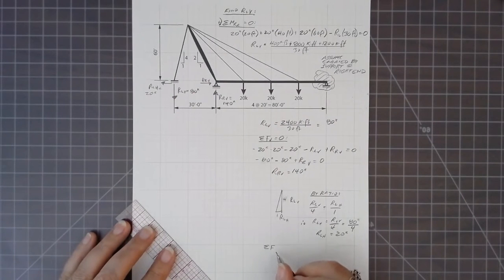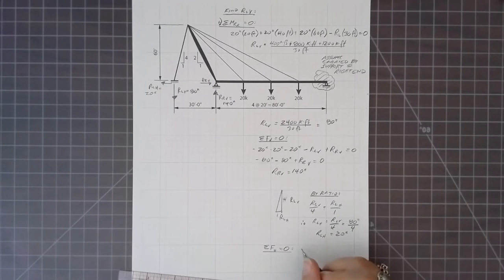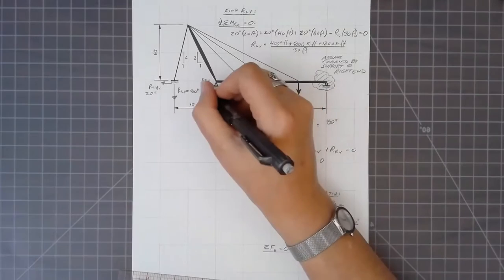So by ratio, the left-hand vertical reaction by ratio to four is the same as the left-hand horizontal reaction by ratio to one. So the left-hand horizontal reaction is 20 kips, one-fourth of the vertical component. So now if we sum forces horizontally, there are only two horizontal forces.